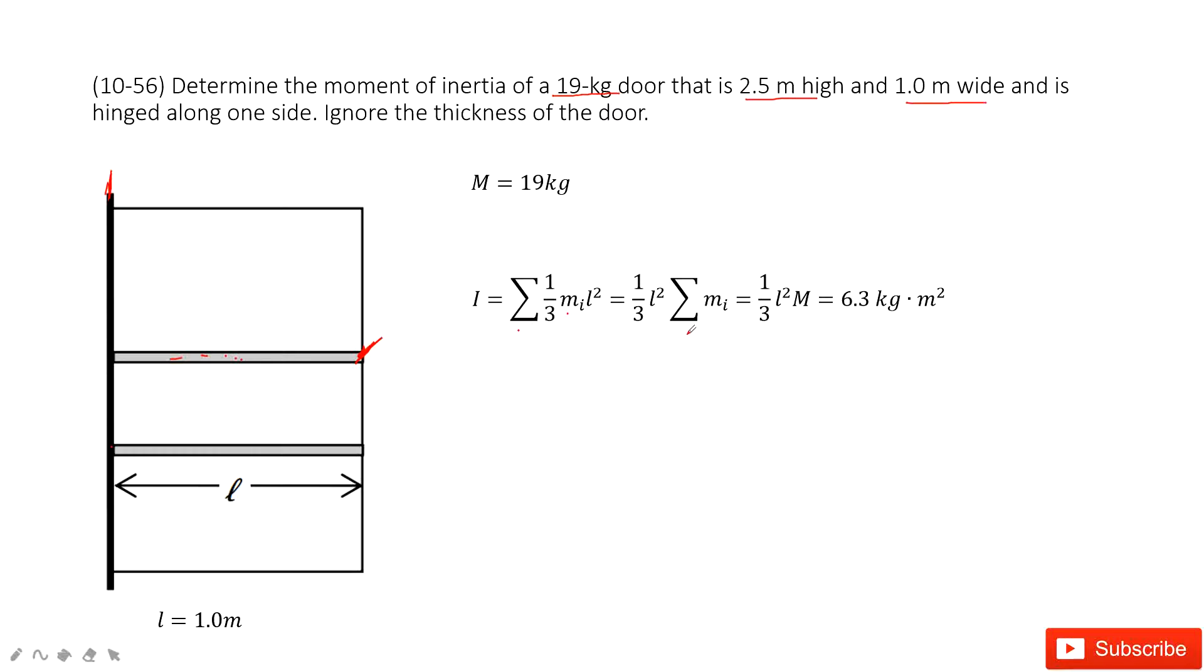The sum of all the rod masses is the mass of the door. So we get the moment of inertia for the door is 1/3 ML squared. Input the known quantities, we get the final answer. Thank you.